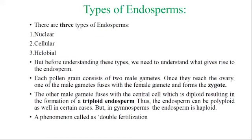There are three types of endosperm: nuclear endosperm, cellular endosperm, and helobial endosperm. Before understanding these types, we need to understand what gives rise to the endosperm. In the development of male and female gametophytes, after fertilization there is formation of the zygote. A pollen grain consists of two male gametes; when considering a single pollen grain, there are two male gametes present.